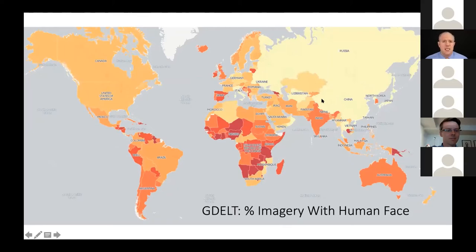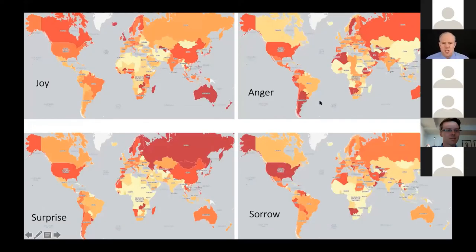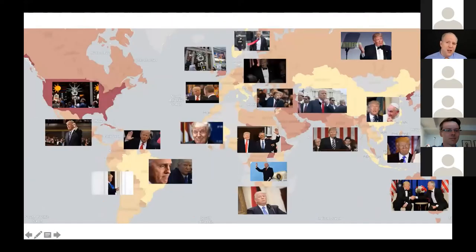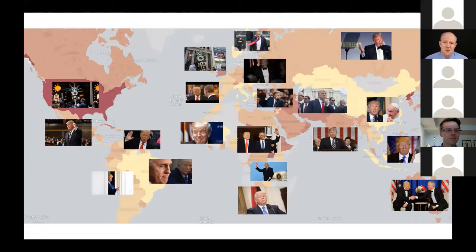We can look at imagery with human faces — is the news conveyed through humans or through objects and activities? We can try to look at the facial emotions and try to map this out. We can do really interesting things like find all the imagery captioned as Donald Trump — it does not do facial recognition. You'll see China versus the Philippines, Trump versus the Pope. At the time, China was unhappy with Trump, so you saw a kind of haggard look, the Pope kind of excited — and vice versa in the Philippines. It's very powerful as we start looking across visual narratives.